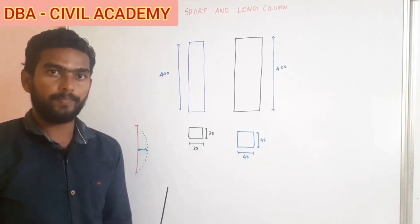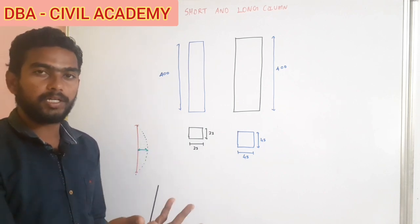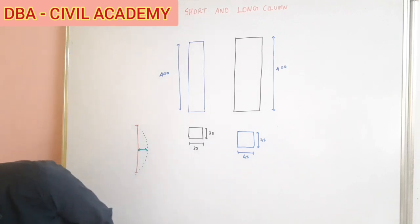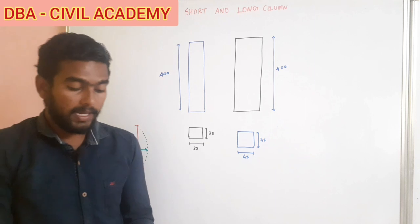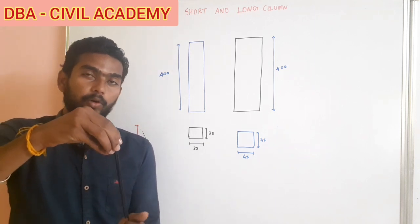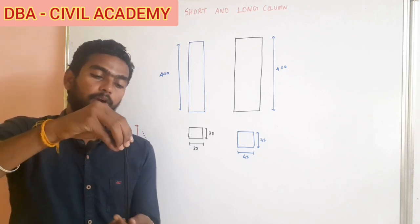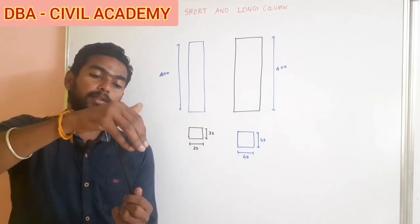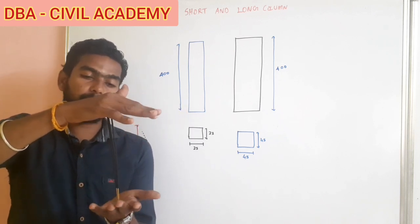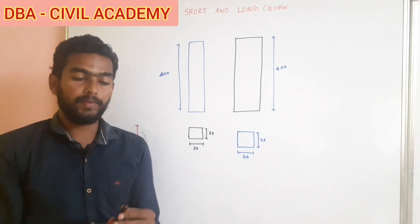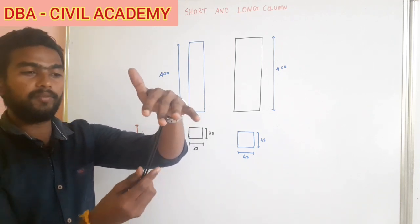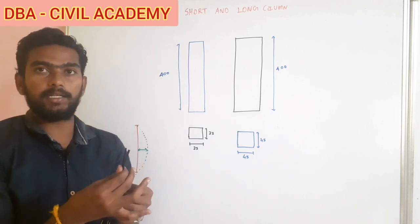This is the geometrical failure — the position is changed. Now, coming to the material: there is also a crushing failure. Why is crushing failure a factor? If we increase the cross-section, the failure mode can change.